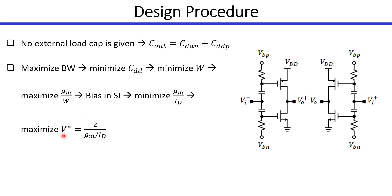So we need to maximize our V-star, and V-star corresponds to the overdrive voltage in the square-law model.